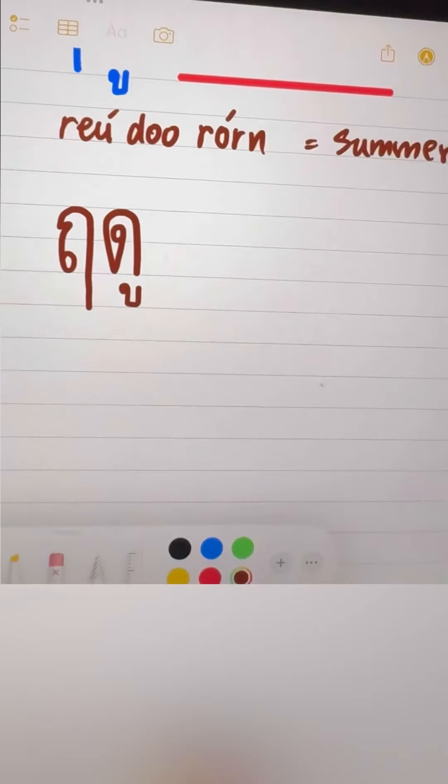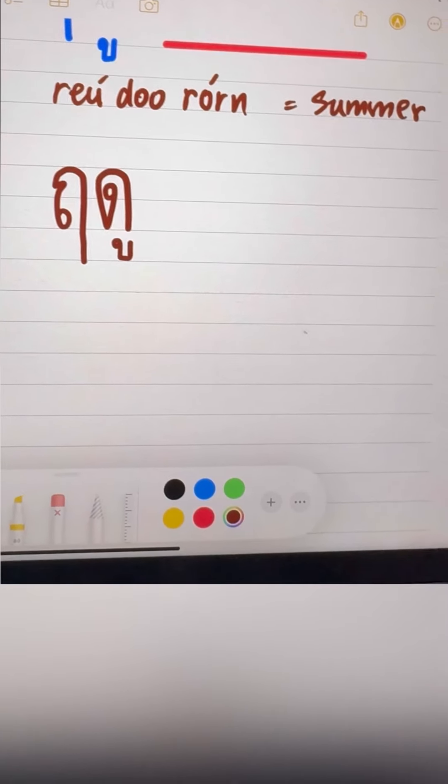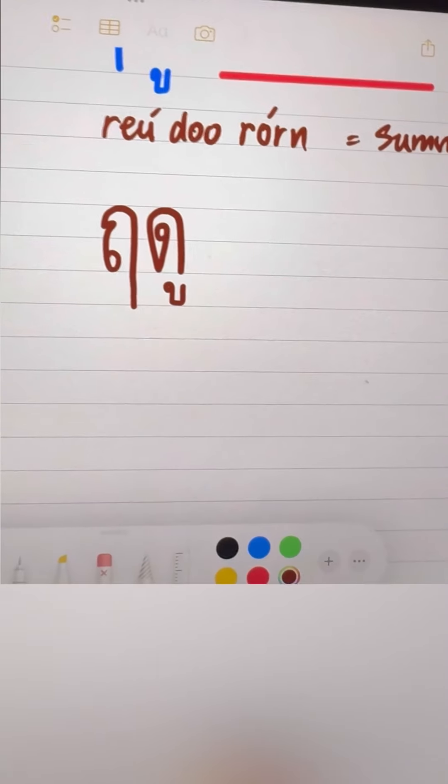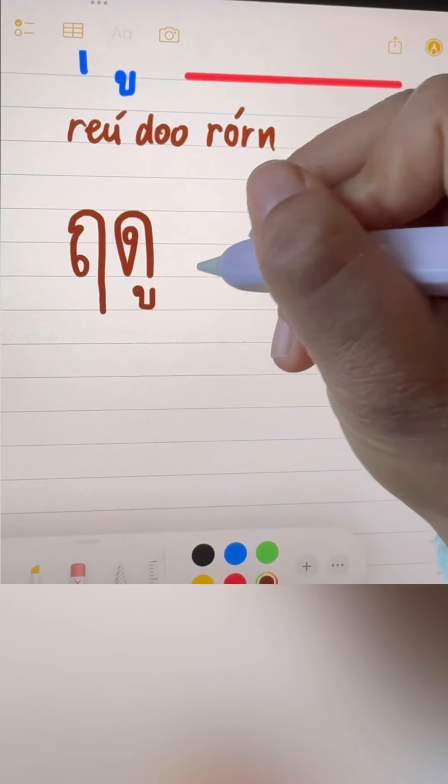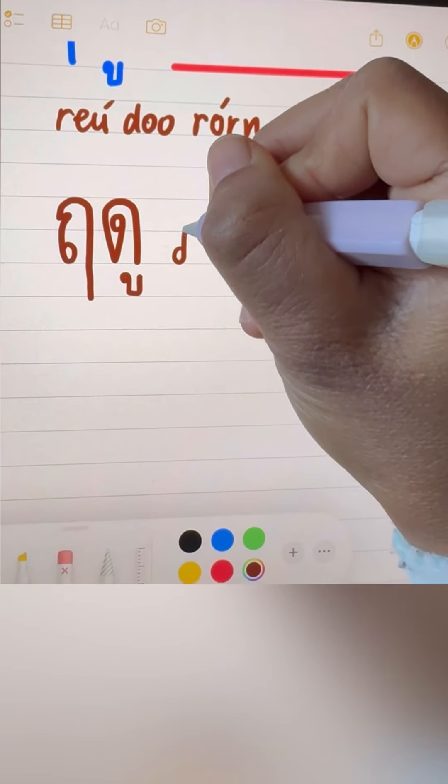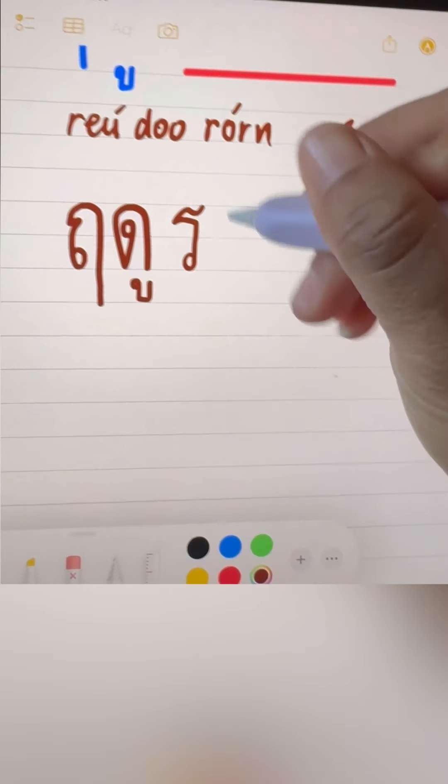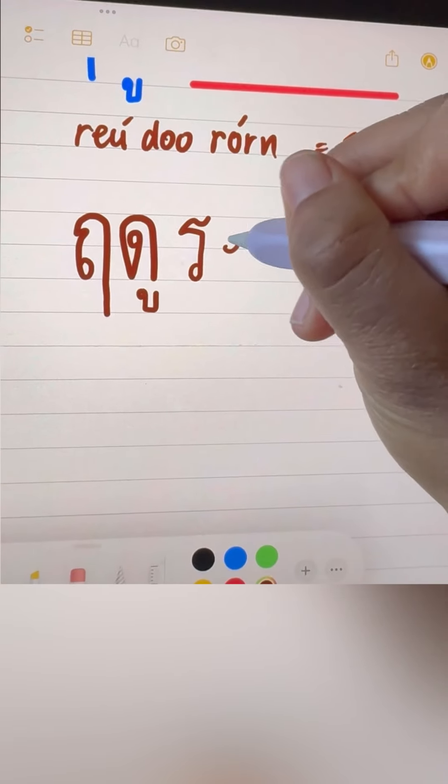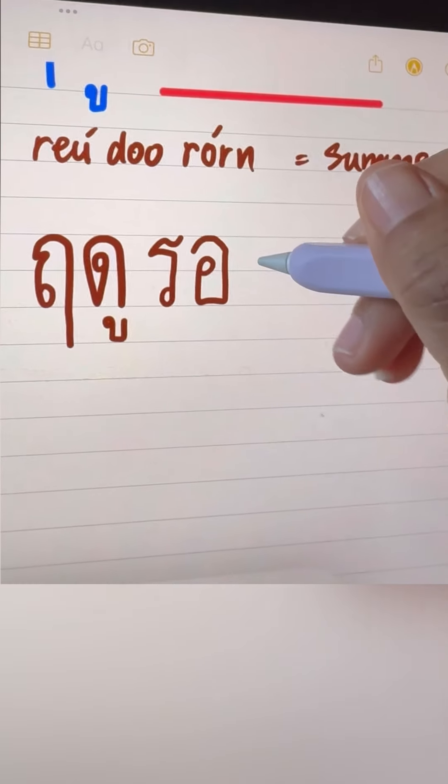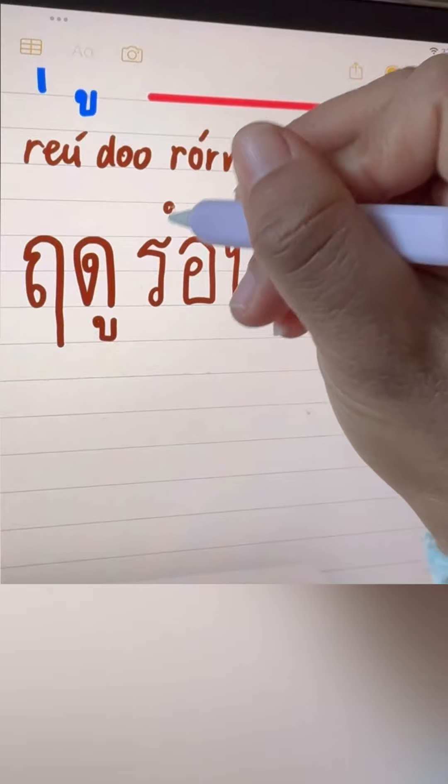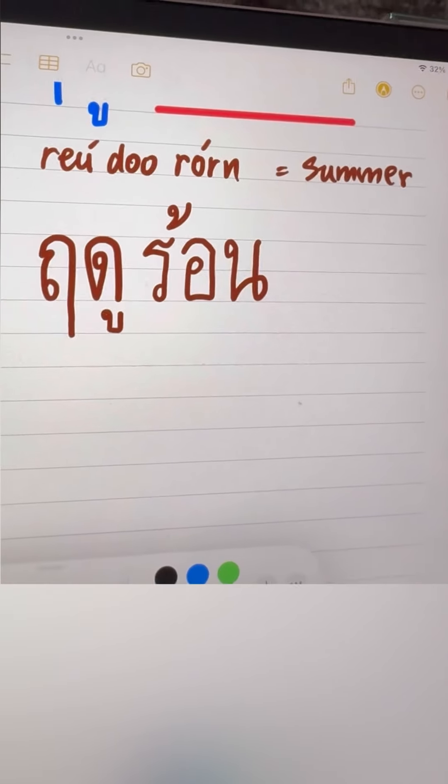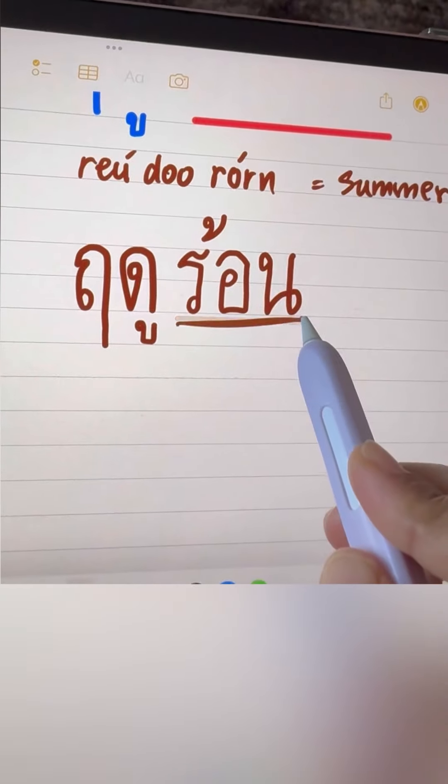For summer, RUDU RAUN, RAUN is HOT. We're gonna use the same vowel. RUDU, I already write down here. And then the word RAUN, we start with RAUN, SALA, O, and then NONU, put tone mark become RAUN. RUDU RAUN, RAUN means HOT.